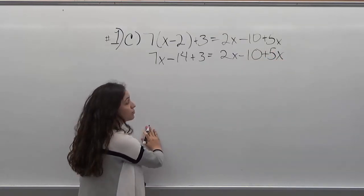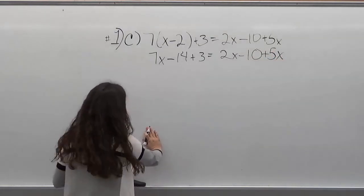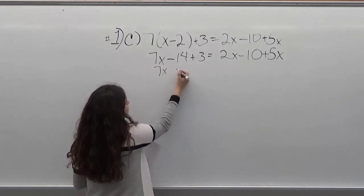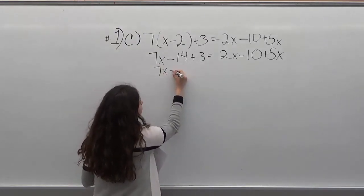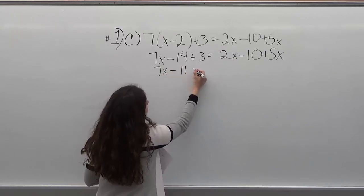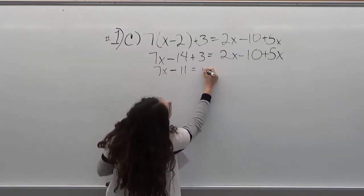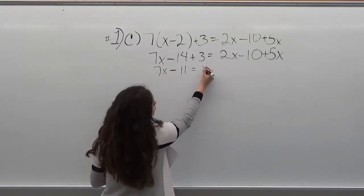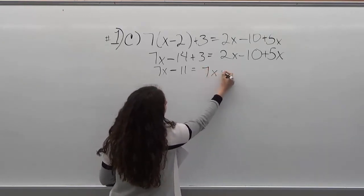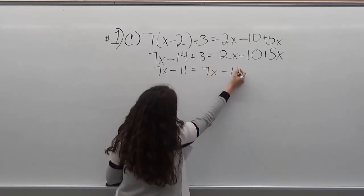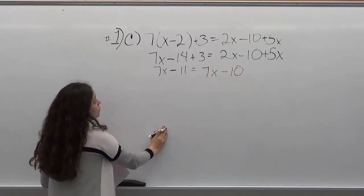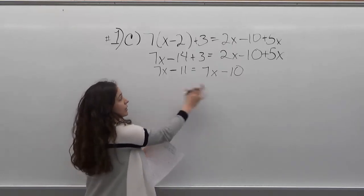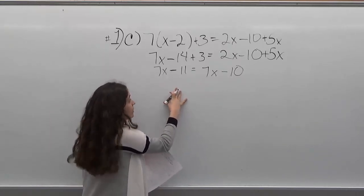So now your next step would be to combine like terms. When you do that you're going to get 7x minus 11 equals 2x plus 5x minus 10, which is 7x minus 10. And now you want to make sure you have everything that has x on one side and everything that does not have x on the other side.